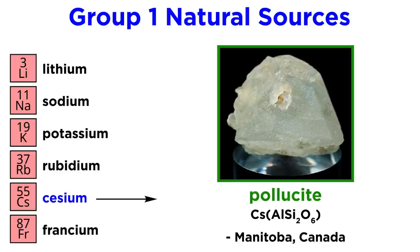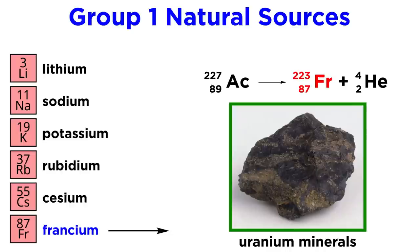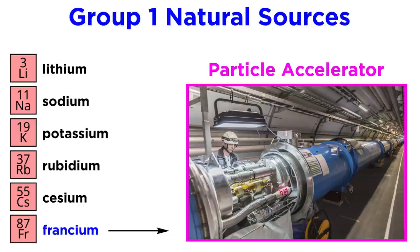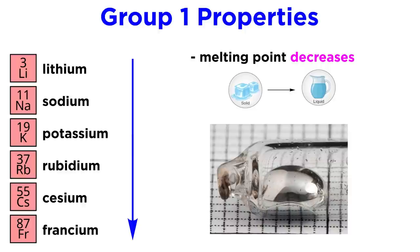Cesium is found in the ore pollucite, which is found primarily in the Manitoba province of Canada. Francium is exceptionally rare, formed as the result of radioactive decay of actinium, which occurs in uranium minerals. All of Earth's crust probably contains less than 20 to 30 grams of francium at any given time. Francium can also be made artificially in particle accelerators.